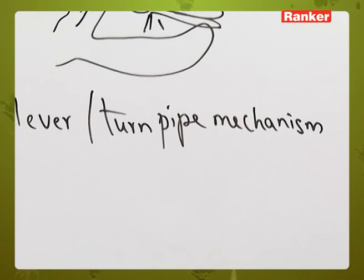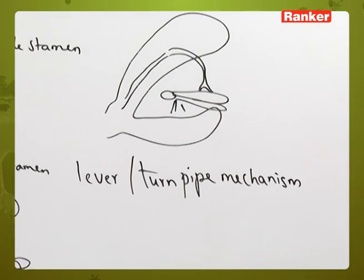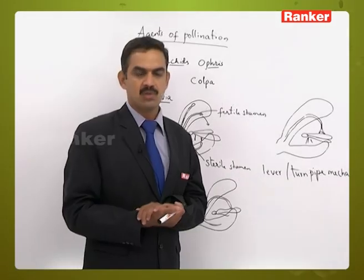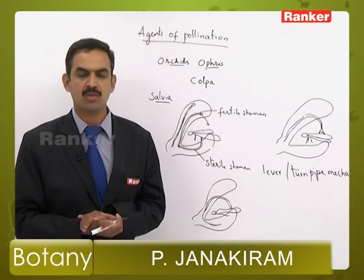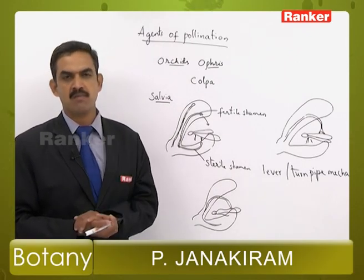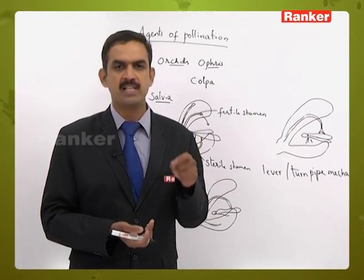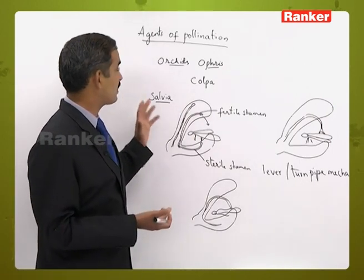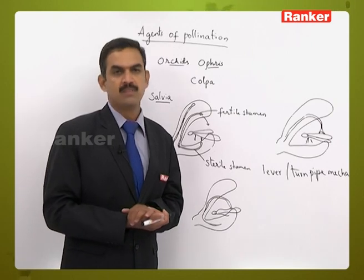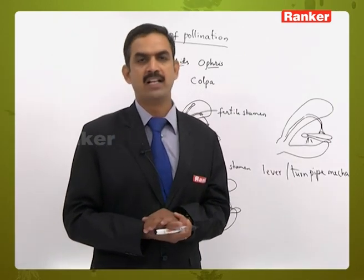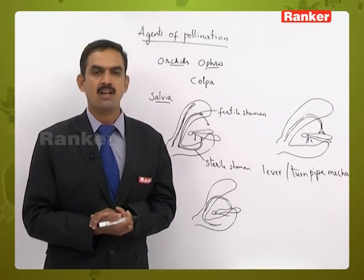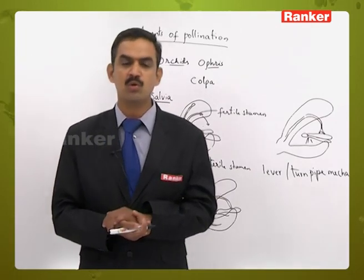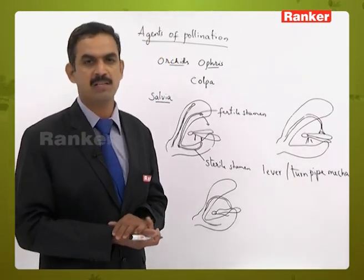This mechanism in Salvia is called the lever mechanism or turnpike mechanism — a special adaptation for insect-mediated pollination. Similarly, the Yucca plant provides space inside the ovary for the Tegeticula moth to lay eggs. These are examples of agents and adaptations helping in cross-pollination, resulting in better seed production and introduction of new characters into plant species, which aids in plant breeding.